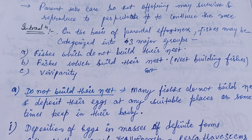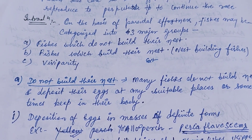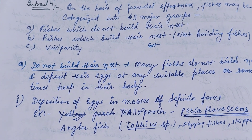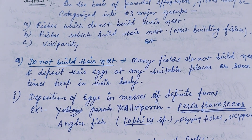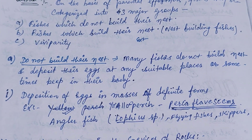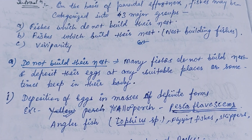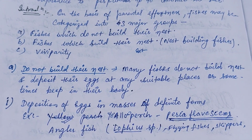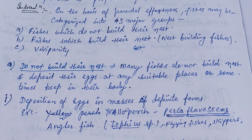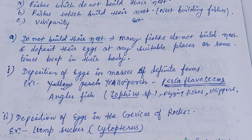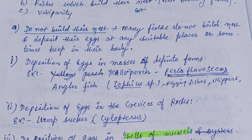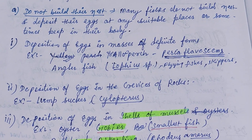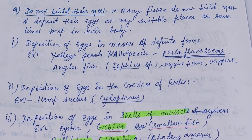On the basis of parental care effectiveness, fishes may be categorized into three major groups: fishes which do not build their nest, fishes which build their nest — also called nest-building fishes — and the third one is viviparity.